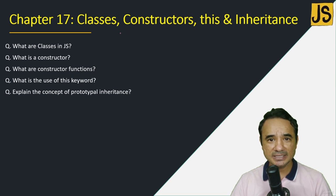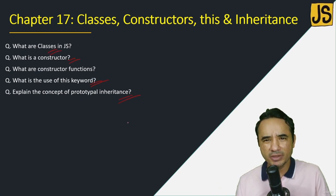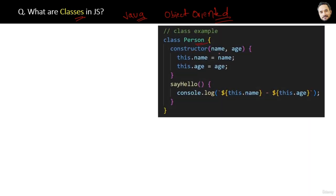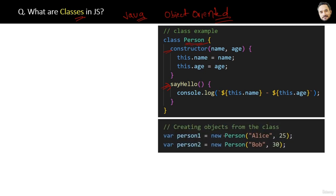Congratulations on completing the browser APIs section. Now a small section on classes, constructors, the 'this' keyword, and inheritance. What are classes in JavaScript? Classes are popular in server-side languages like Java and C#, but their usage is growing in JavaScript because they provide object-oriented structured code, which is very beneficial for large enterprise-level applications. Here, 'Person' is a class with a constructor and a function. To use the class, we create an object using the 'new' keyword, passing name and age as parameters.